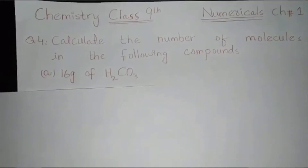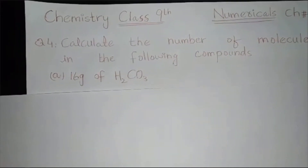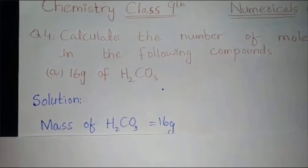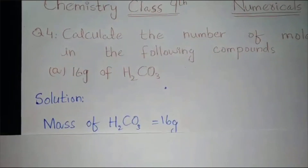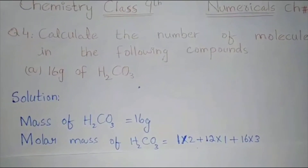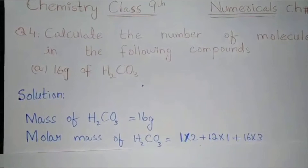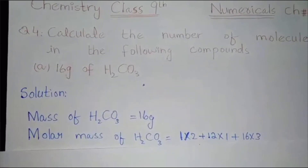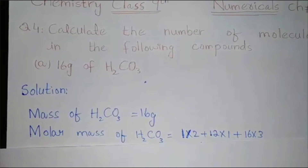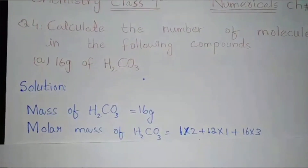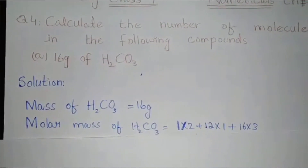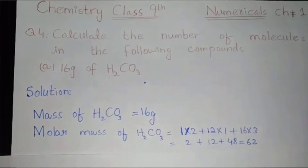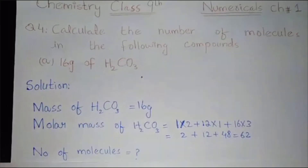The mass of H₂CO₃ (carbonic acid) is equal to 16 grams. Now we will find the molar mass of carbonic acid: hydrogen mass is 1 multiplied by 2, plus carbon mass 12 multiplied by 1, plus oxygen mass 16 multiplied by 3. Adding these gives a molar mass of 62 grams per mole.